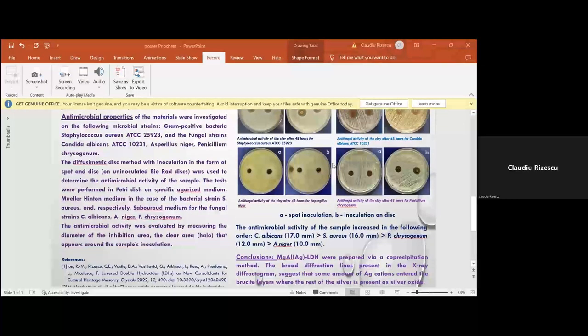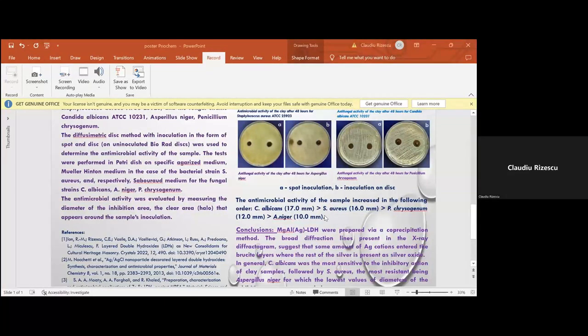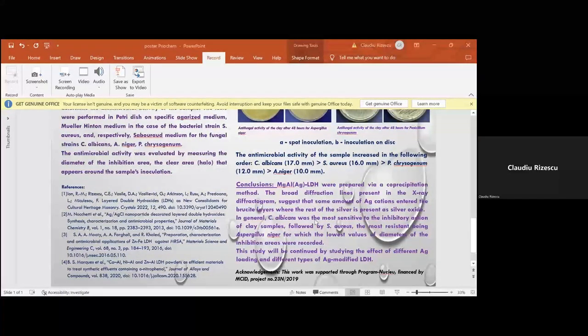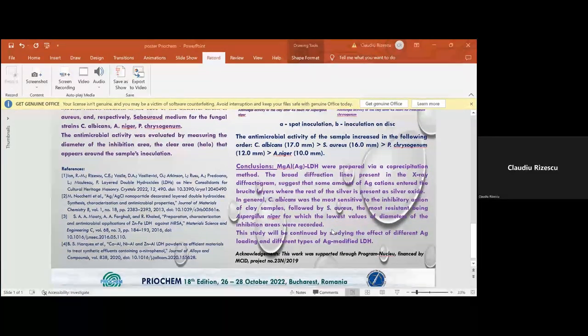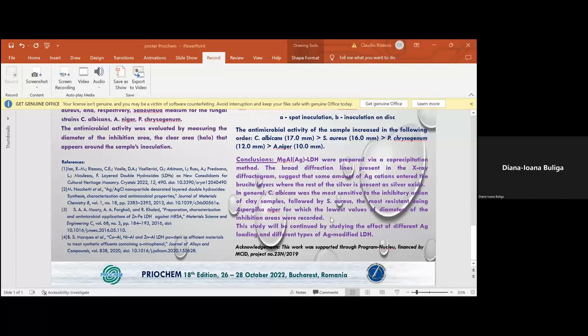The antimicrobial properties were investigated and the materials show antimicrobial activity for all strains tested. In conclusion, magnesium aluminum silver layer double hydroxide was prepared via coprecipitation method. The material consists of layer double hydroxide and silver oxide dispersed in its structure. Candida albicans was the most sensitive to the inhibition of the clay samples followed by Staphylococcus aureus, and Aspergillus niger showed the highest resistance. This study will be continued by studying the effect of loading in different types of silver modified layer double hydroxide. Thank you for your attention.